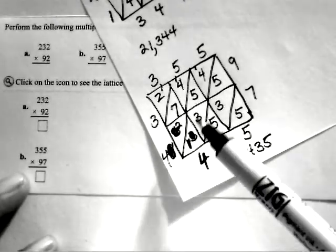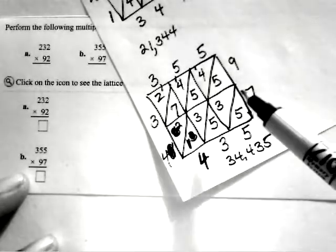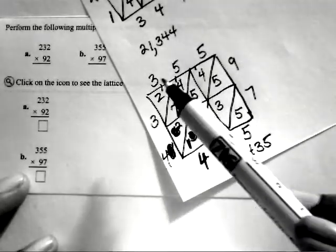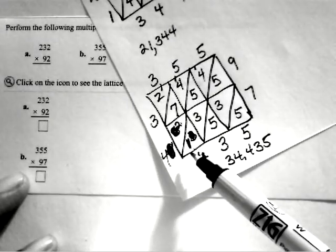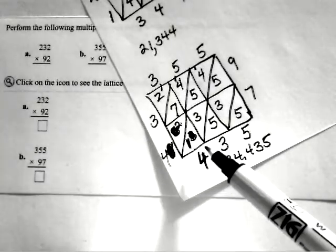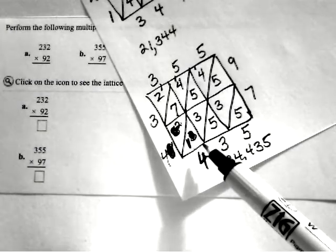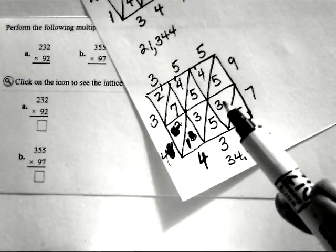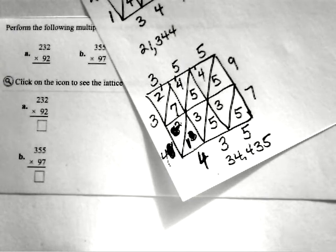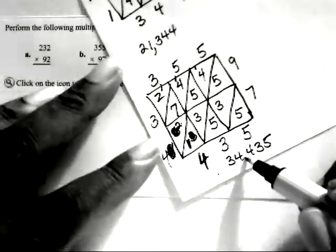I just made a mistake right here. When I multiply, when I should be multiplying 3 times 7, instead of 9 times 7. So it's 3 times 7. That's a 2 and that's a 1. So do double check your work for any mistakes because you could be getting the wrong answer here. So the correct answer for 355 times 97 would be 34,435.